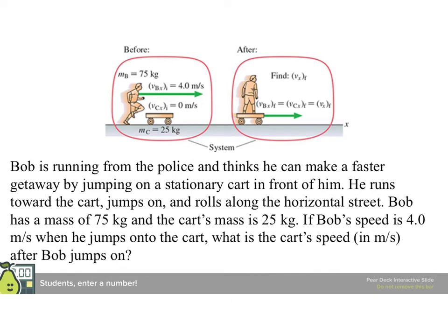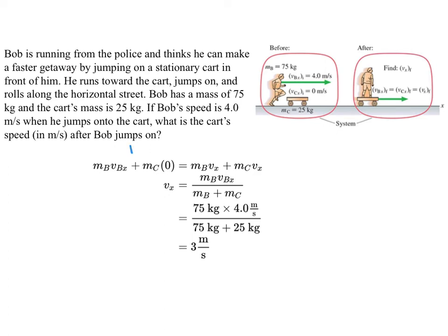Bob is running from the police, and thinks he can make a faster getaway by jumping on a stationary cart in front of him, because Bob is not that bright. He runs towards the cart, jumps on, and rolls along the horizontal street. Bob has a mass of 75 kilograms, and the cart's mass is 25 kilograms. If Bob's speed is 4 meters per second when he jumps on the cart, what is the cart's speed in meters per second after he has jumped on? Here we can say that the initial momentum equals the final momentum, but the initial momentum is just Bob's, because the cart has zero. We solve this over, and we find that we get that the final speed at the end is 3 meters per second.